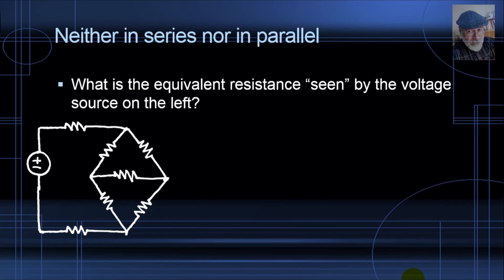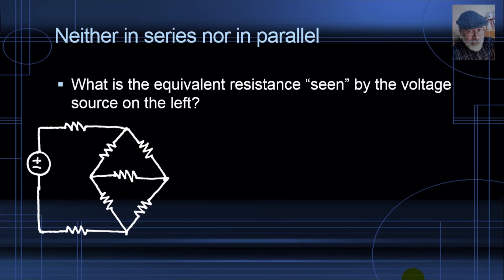Let's look at a little example to illustrate how useful these conversions from delta to Y or Y to delta are. Look at that circuit — we want to know the equivalent resistance seen by the source on the left. At first you say: holy moly, I only have these two resistors in series, and all the other resistors are neither in series nor in parallel. But look — there are two triangles, one right side up and one upside down. I choose one and replace it by a star.